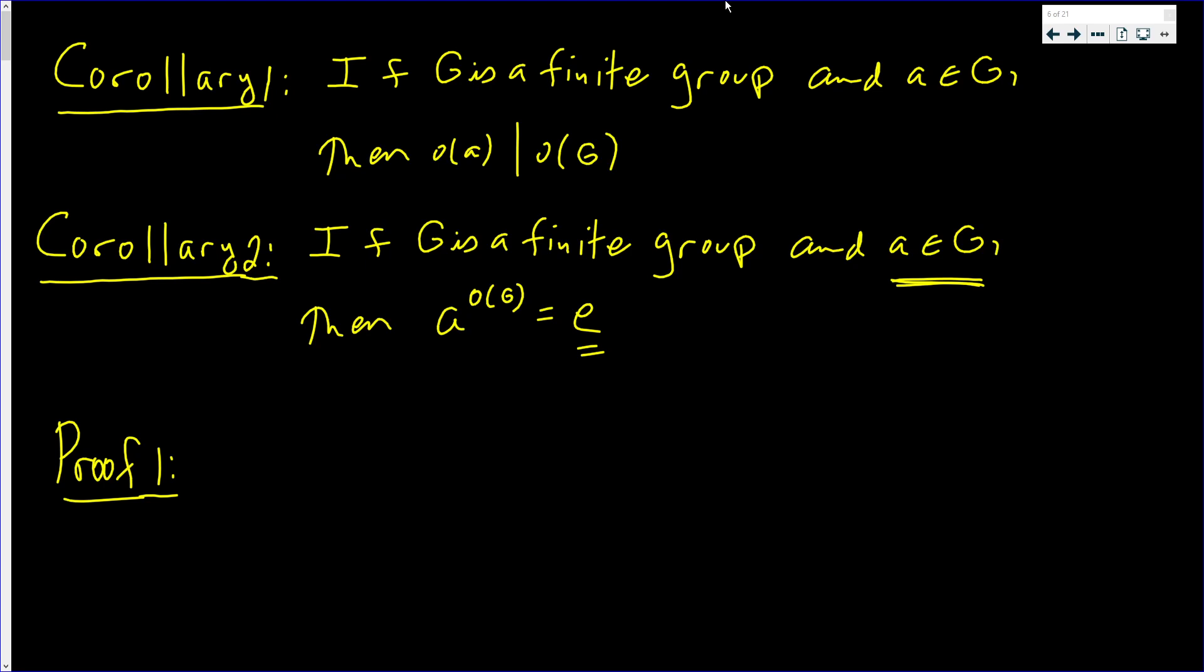Now if I can find a subgroup who has the same order as A, then we got it because the order of that group must divide the order of G. That's exactly what the Lagrange theorem states. So what I'm going to say is consider this set generated by A, which is A to the 0, A to the 1, A to the 2, and so on.